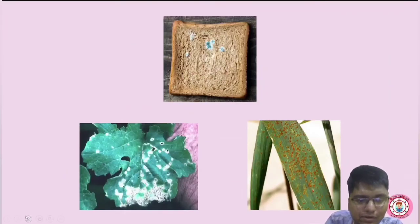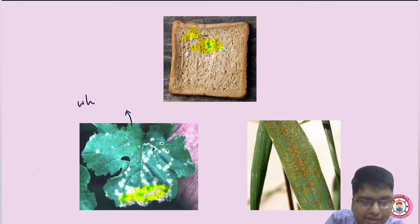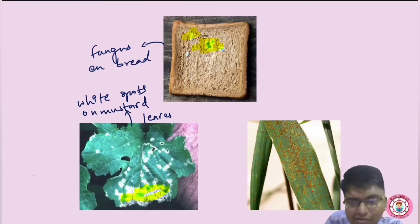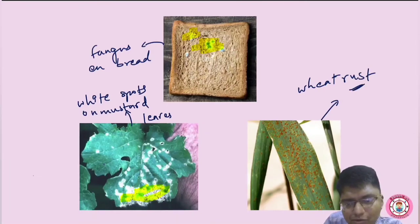Some important pictures are shown here. This is fungus grown on bread. This is the white spot on mustard leaves — this is a parasitic fungi. And this last picture is known as wheat rust — we can see the red, rust-like growth on the wheat leaf, similar to iron rust, caused by a fungus.